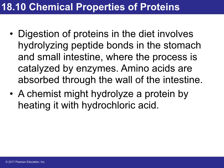How does it work? Digestion of protein in the diet involves hydrolyzing peptide bonds that happen in the stomach and in the small intestine. This is catalyzed by enzymes, which is covered in this chapter, and amino acids are absorbed through the wall of the intestine. Chemists might hydrolyze a protein by heating it with hydrochloric acid, which is one of the chemicals we have in the stomach to help digestion of proteins.